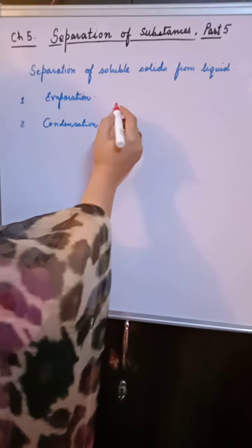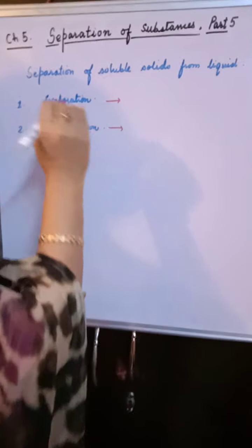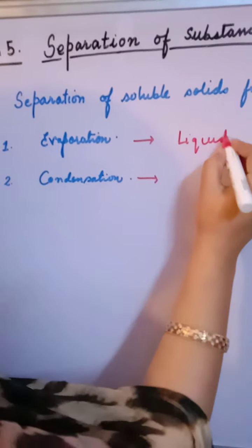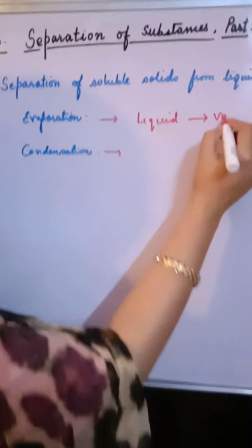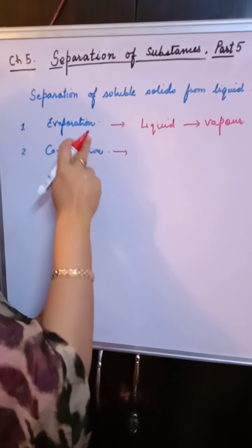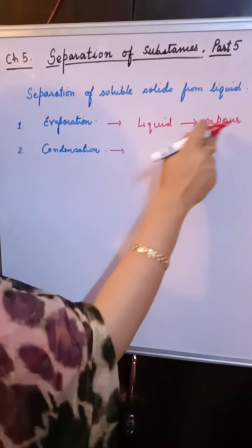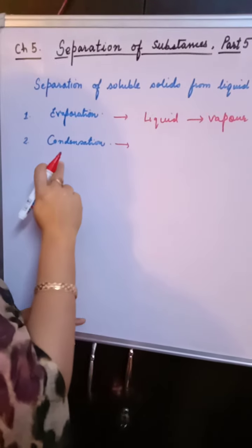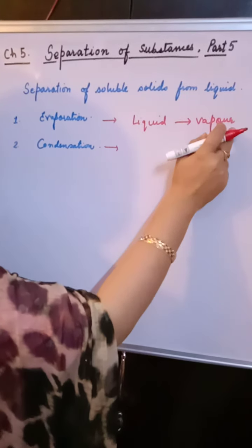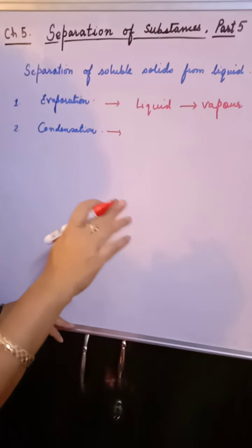First of all, I want to make one thing clear - the definition part. Evaporation is a process by which liquid changes into vapor, into gaseous form. This process is known as evaporation where liquid changes into water vapor.